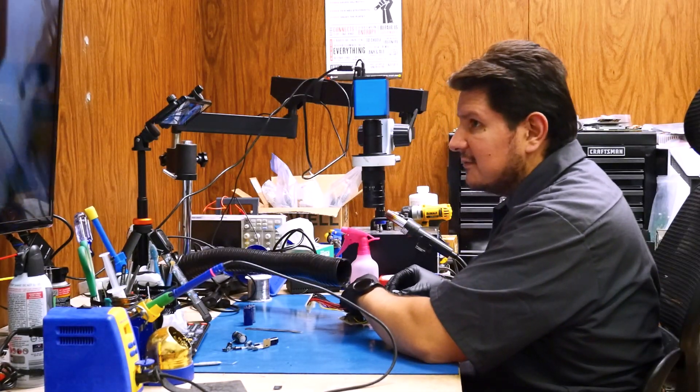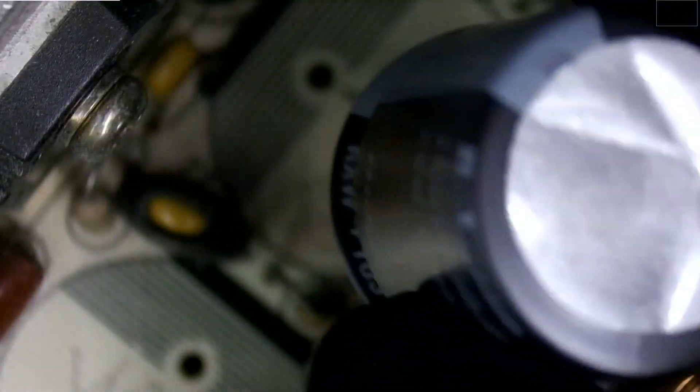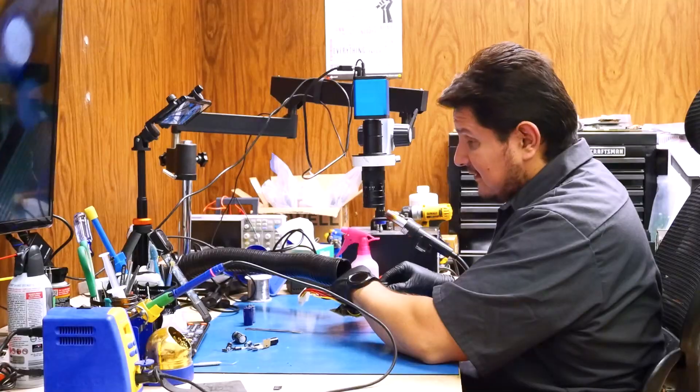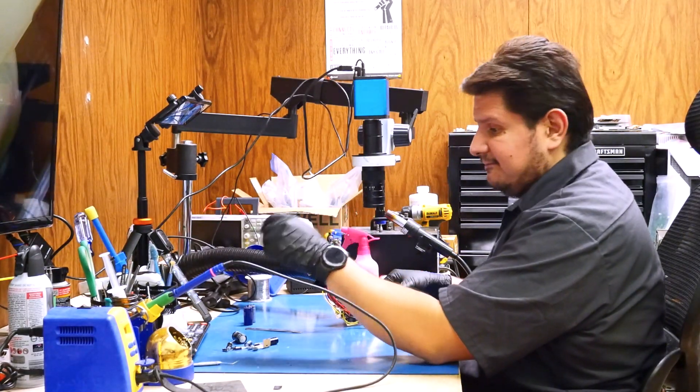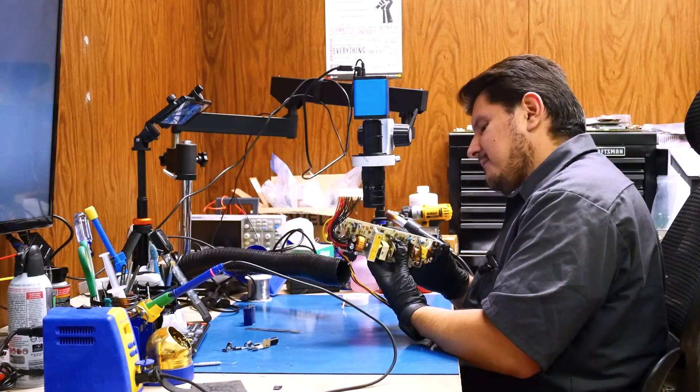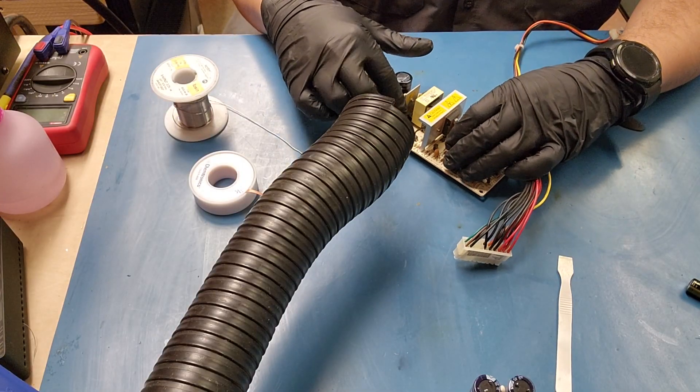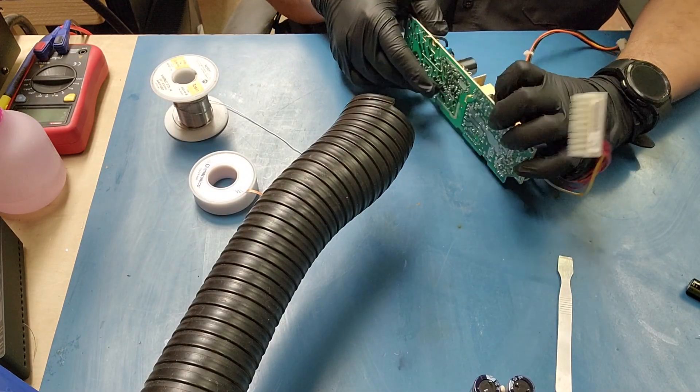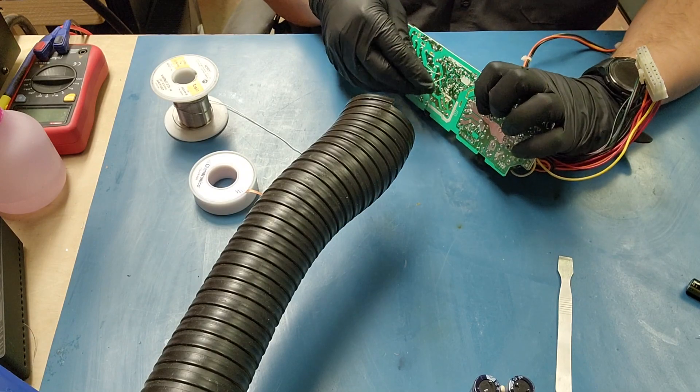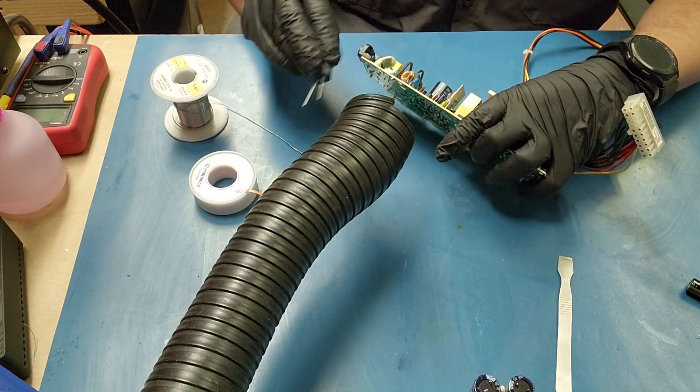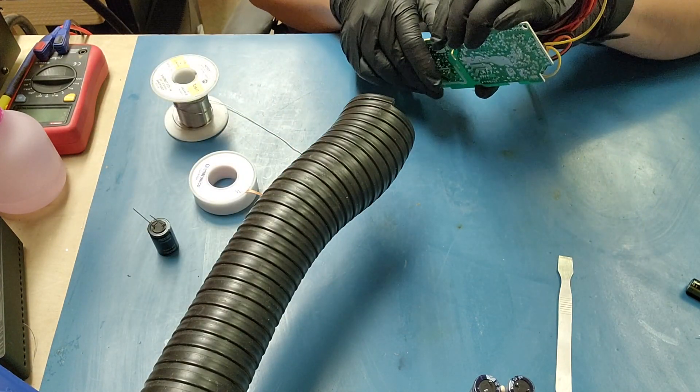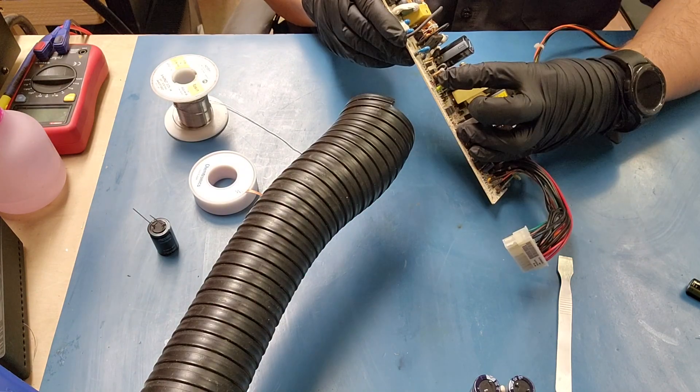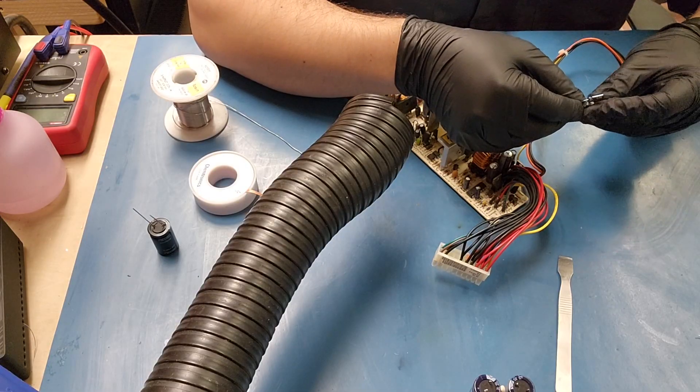And once again, you're going to want to make sure you pay attention to polarity on this thing. Things will explode if you get it wrong. We'll just go ahead and fold those for now. And we have a couple of smaller capacitors right in here that need to be removed. It probably would be easier if I don't have the giant cap right here. So we'll set that aside while we go ahead and replace these 22µF 50 volts.